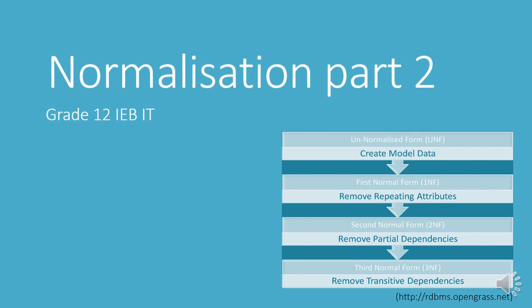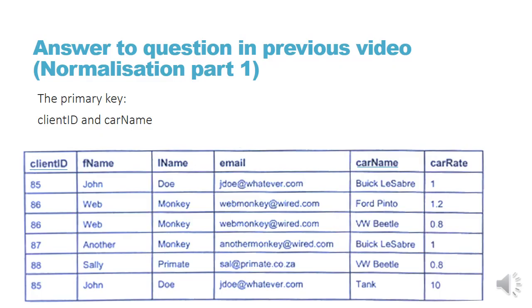Normalization part 2, Grade 12 IEBIT. This is the answer to the question in the previous video, normalization part 1. The primary key is the client ID and the car name together — it's a composite key.